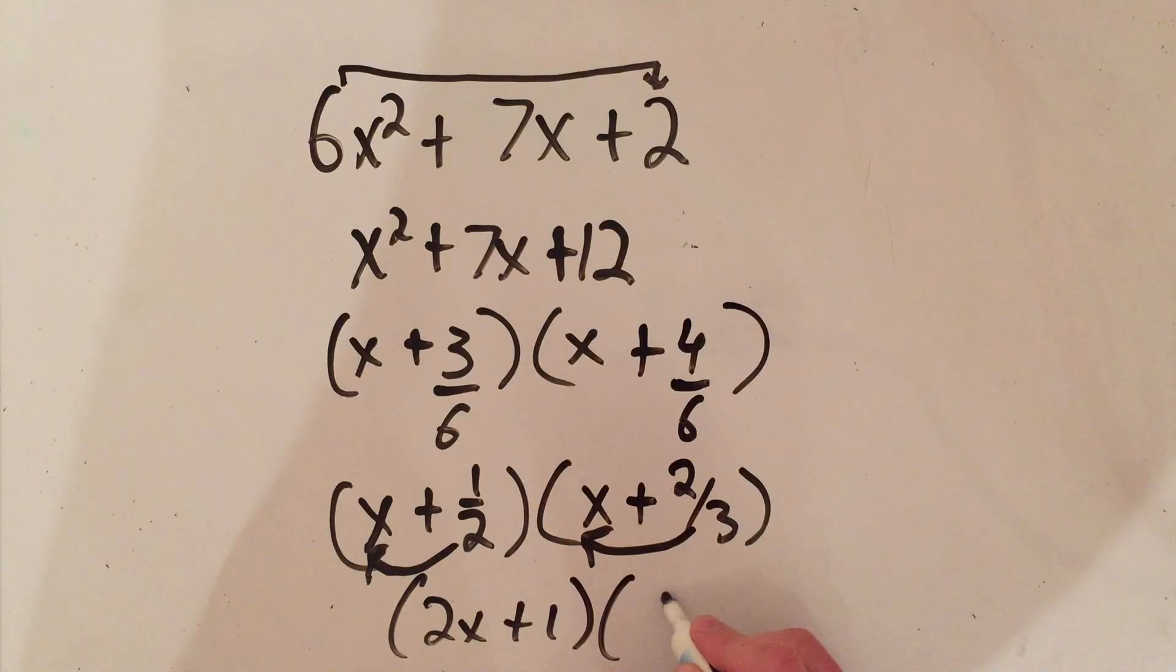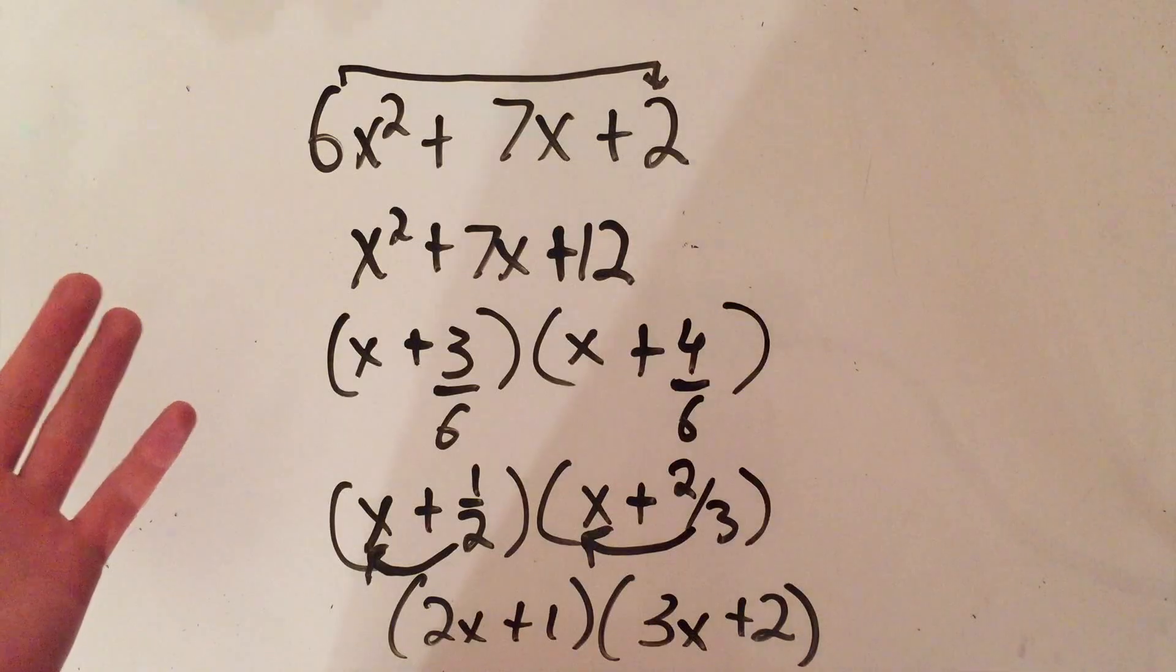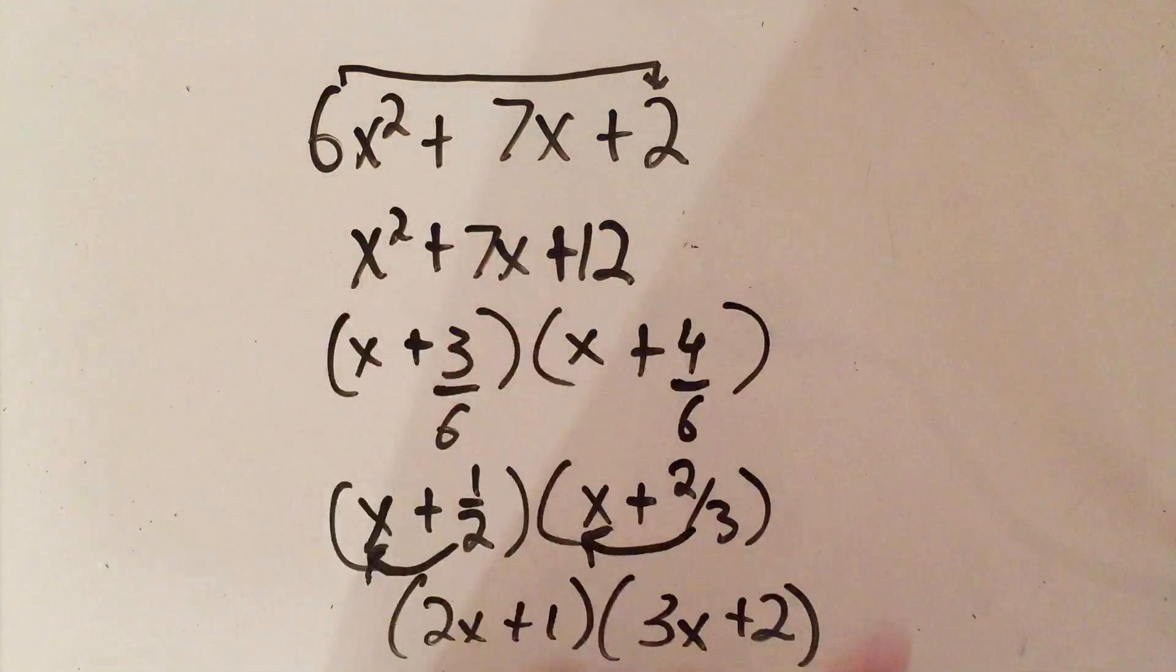1/2 becomes a 1, the 3 goes in front of the x, and 2/3 becomes 2. And hey, look at that - that's what this factored into before. So I'll leave it up to you which method you find faster. I think this is way easier, and frankly, I'm excited. I don't know about you, but I think that's awesome.